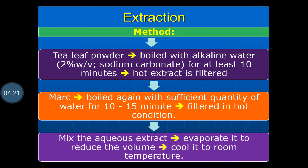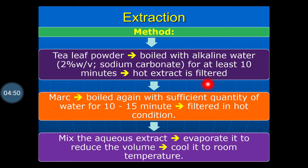The extraction of caffeine is shown from tea leaf powder. Tea leaf powder is taken and boiled with alkaline water — that is 2% weight by volume sodium carbonate solution — for at least 10 minutes, then filtered while hot. The marc obtained is again boiled with a sufficient quantity of water for 10 to 15 minutes to extract the remaining caffeine, then filtered again in hot condition.